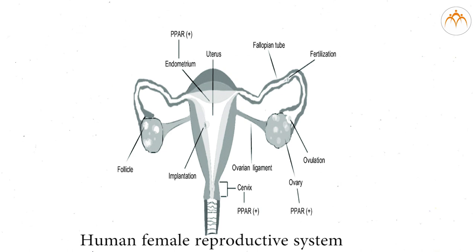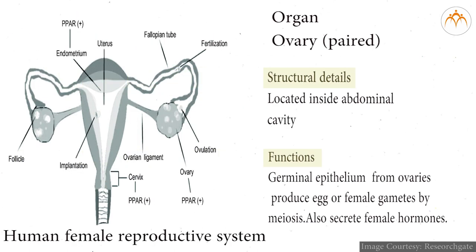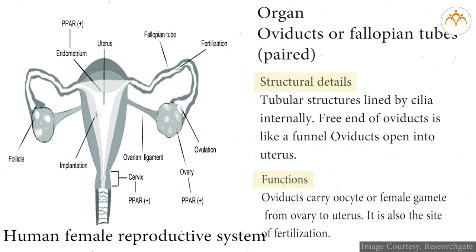Human female reproductive system: ovaries are paired, located inside the abdominal cavity. Germinal epithelium from ovaries produces eggs or female gametes by meiosis, and also secretes female hormones. Oviducts or fallopian tubes are paired tubular structures lined by cilia internally. The free end of the oviduct is like a funnel. Oviducts open into the uterus and carry the oocyte or female gametes from the ovary to the uterus. The oviduct is also the site for fertilization.